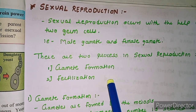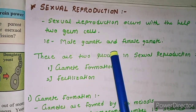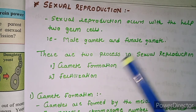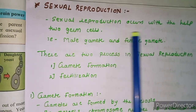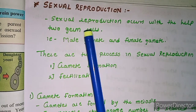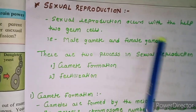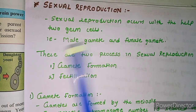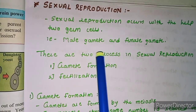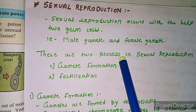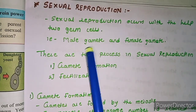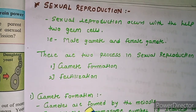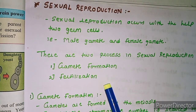In sexual reproduction there are two processes: gamete formation and fertilization. Sexual reproduction occurs with the help of two germ cells — a male gamete and a female gamete — with two parents involved. The two processes are gamete formation and fertilization.